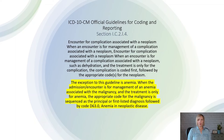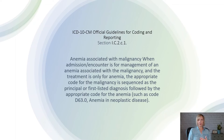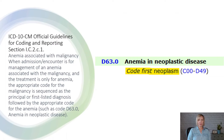An exception to the encounter for complication associated with a neoplasm guideline is when an admission is specifically for the management of anemia associated with a malignancy. The guideline tells us that for situations where the treatment is solely for anemia, the appropriate code for the malignancy should be listed as the principal diagnosis, followed by code D63.0 for anemia in neoplastic disease. This guideline is also consistent with the instructional note found at code D63.0 telling us to code first the underlying neoplasm.